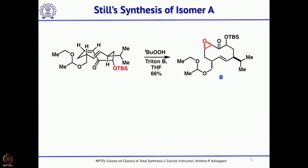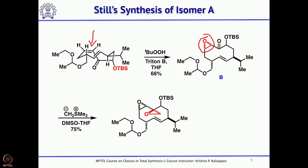First the epoxidation was performed. Since it is an electron-deficient double bond, tetrabutyl hydroperoxide and titanium can be used. Looking at the compound, the epoxide comes from the backside, giving an alpha-epoxide in the product. However, for Periplanone B the epoxide should be beta — what was obtained was alpha. Nevertheless, he went ahead and treated with trimethylsulfonium ylide to get the second epoxide. Both stereocenters of the epoxides were of the opposite configuration, though it is useful for making analogs of the natural product.